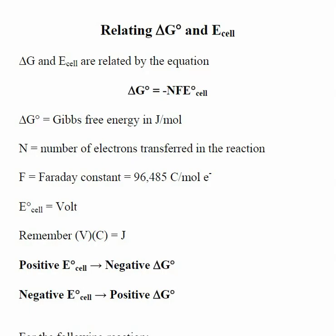One of the other constants that we have used in this class is E cell, or the cell potential for an electrochemical cell. So let's take a second and see how E cell and delta G are related to each other.